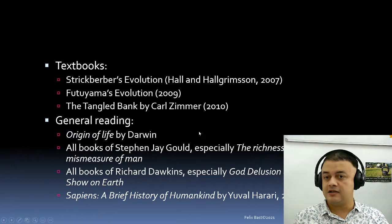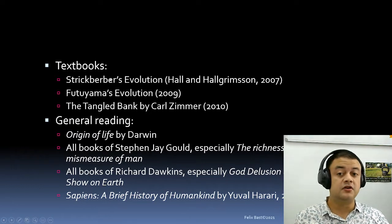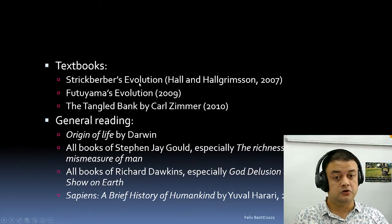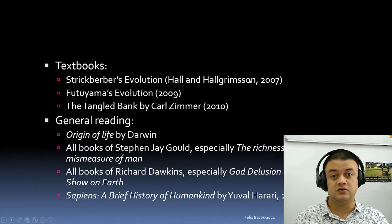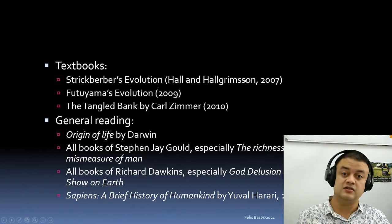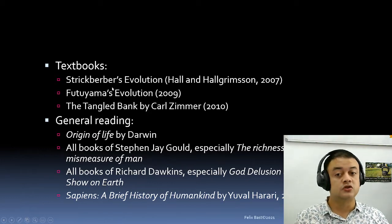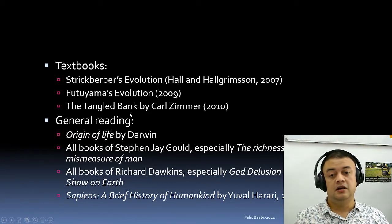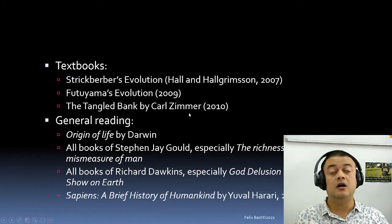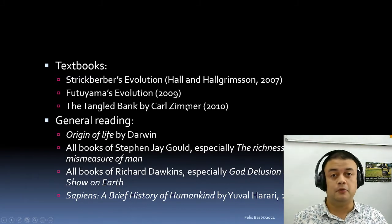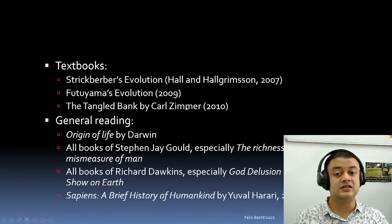As I was telling you, Strickberger's Evolution by Hall and Hallgrimsson, 2007, is a very nice textbook, as is Futuyma's Evolution. The Tangled Bank by Carl Zimmer — he's a popular science writer — is also a very nice book.